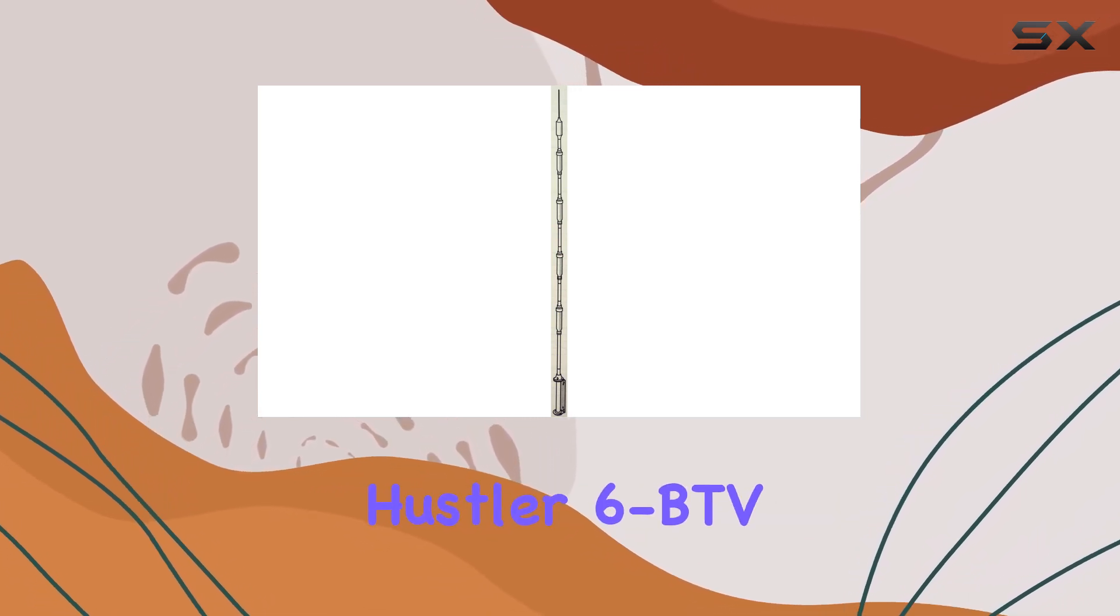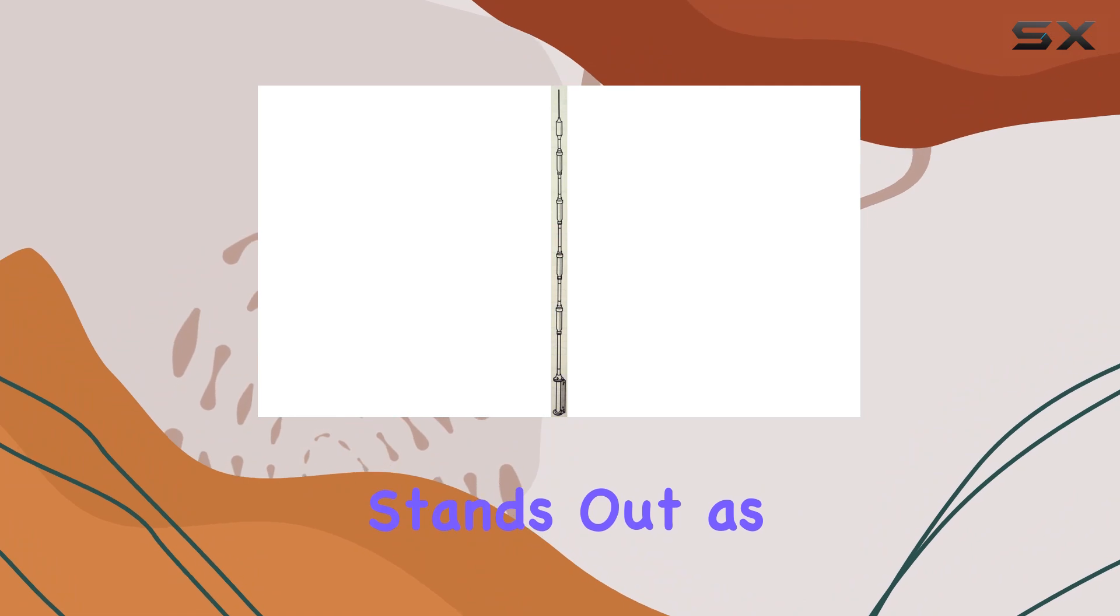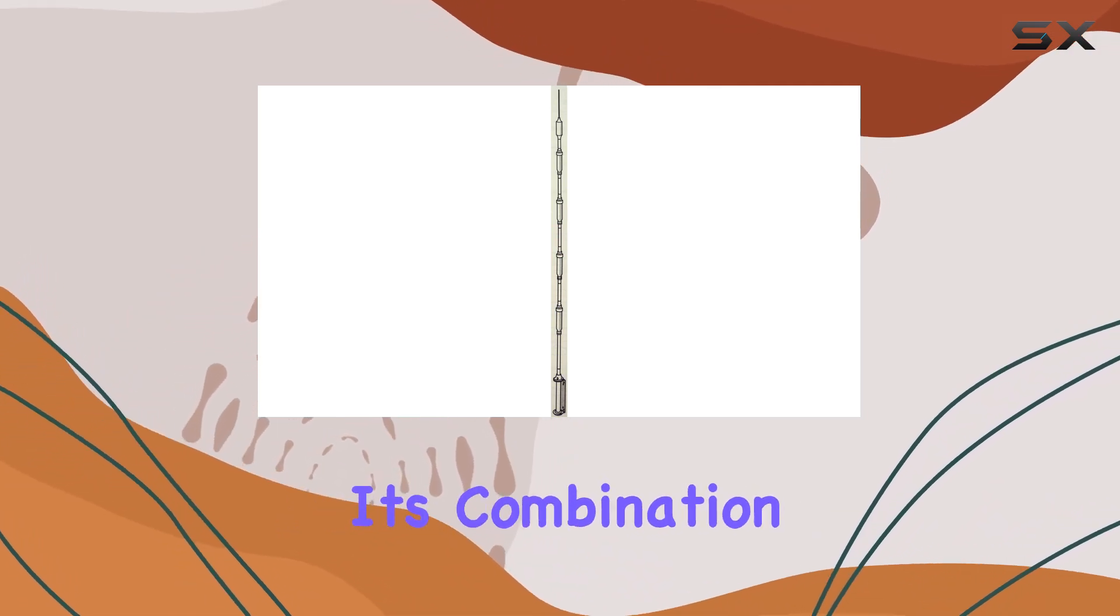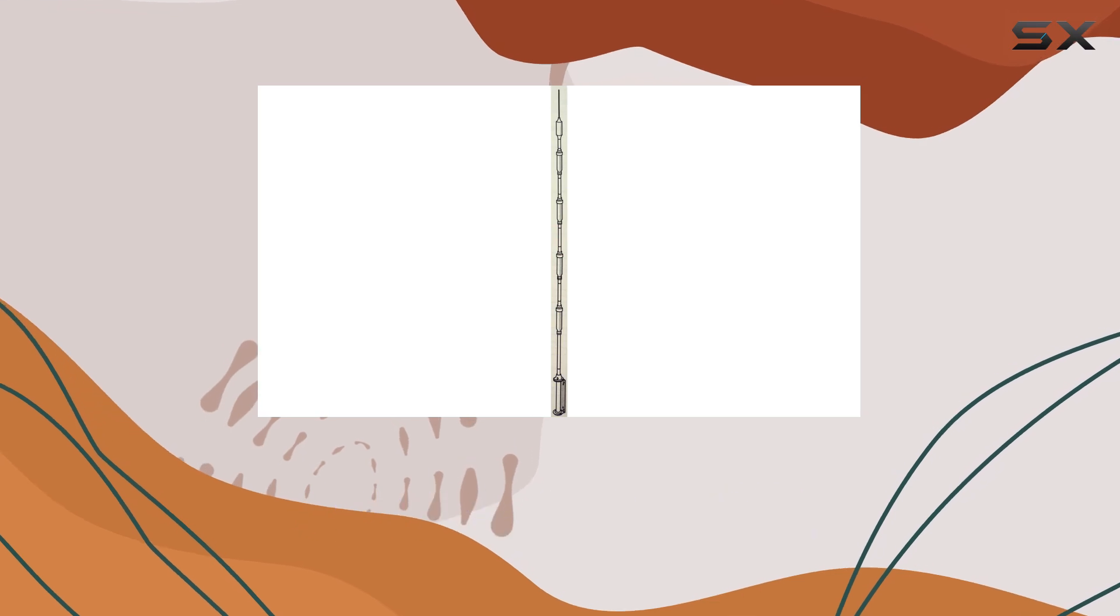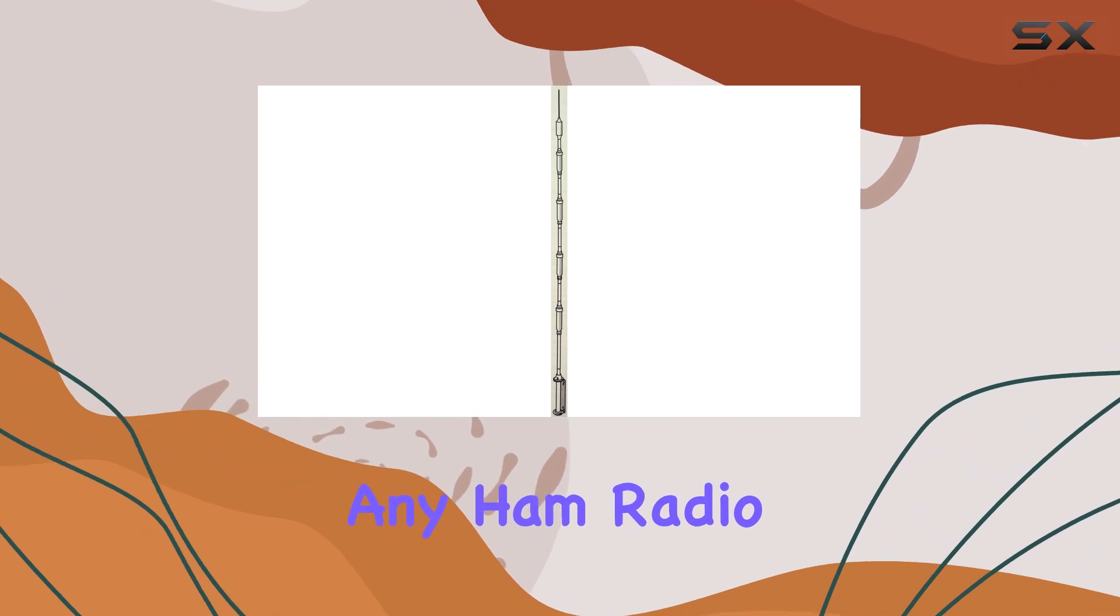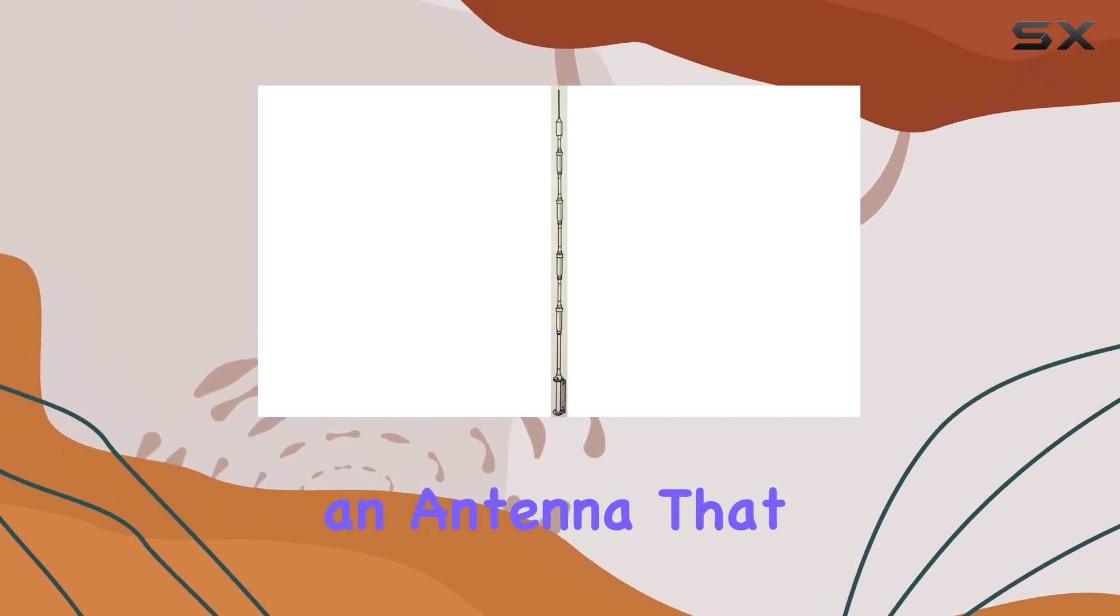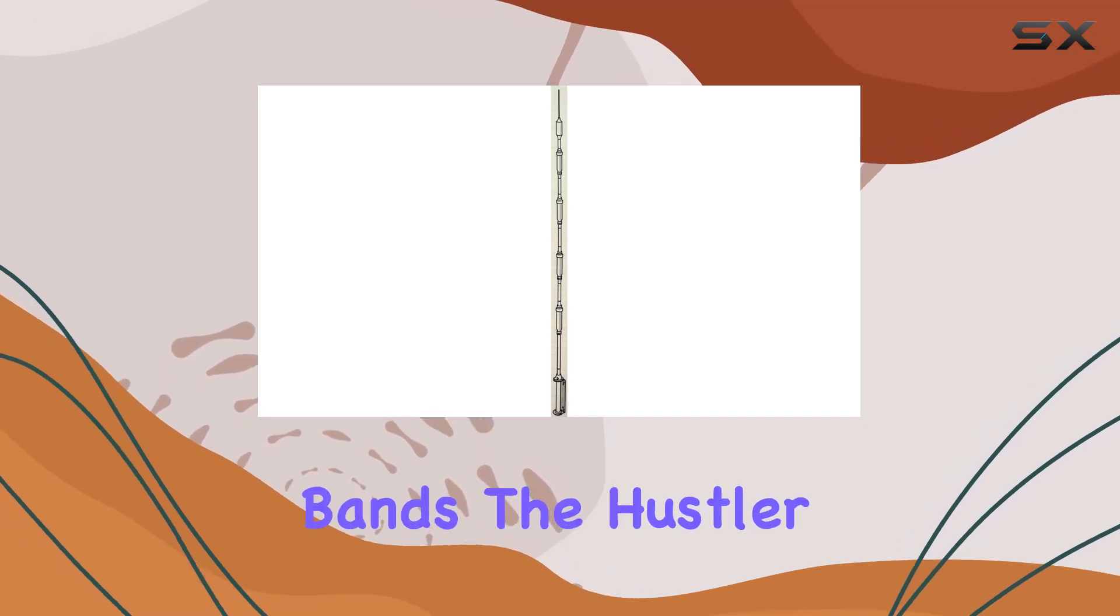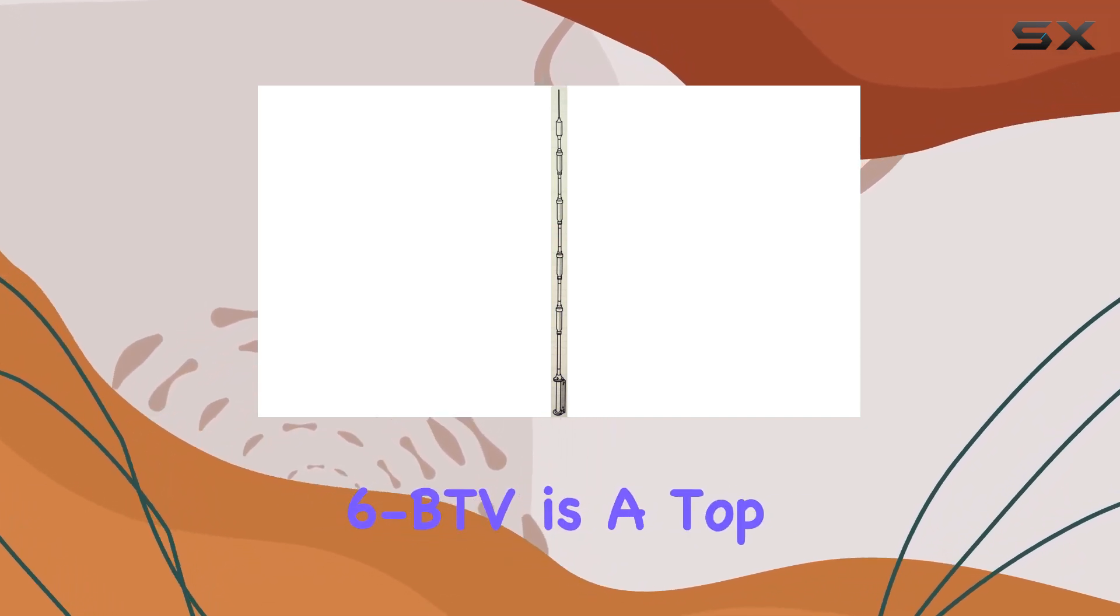In summary, the Hustler 6 BTV vertical antenna stands out as one of the best multi-band HF antennas available. Its combination of wide bandwidth, high power handling, and robust construction makes it a valuable addition to any ham radio station. If you're looking for an antenna that offers both performance and reliability across multiple bands, the Hustler 6 BTV is a top contender.